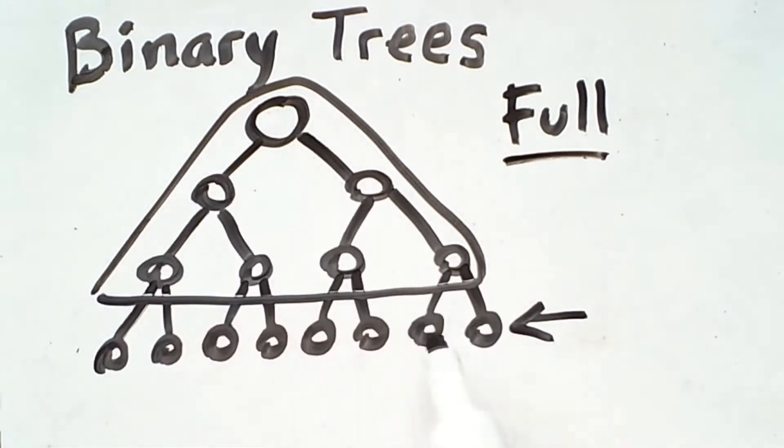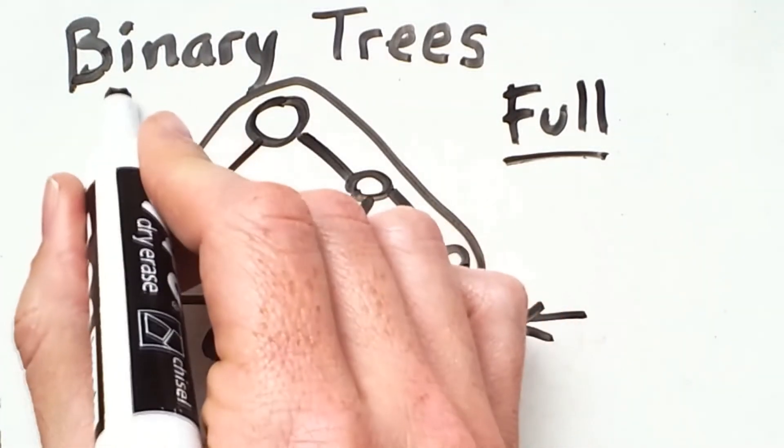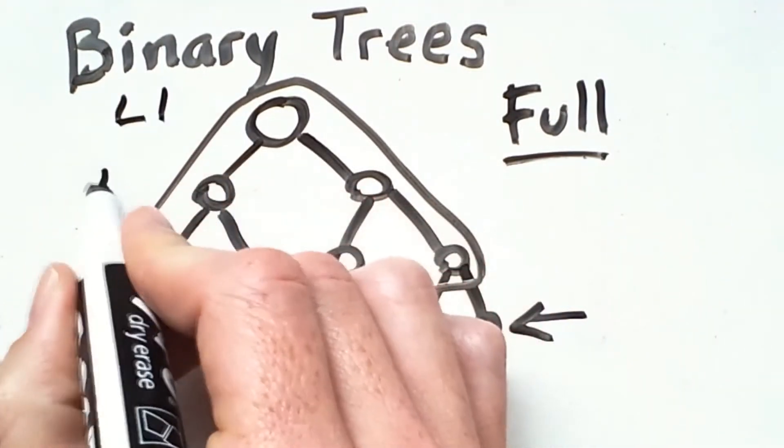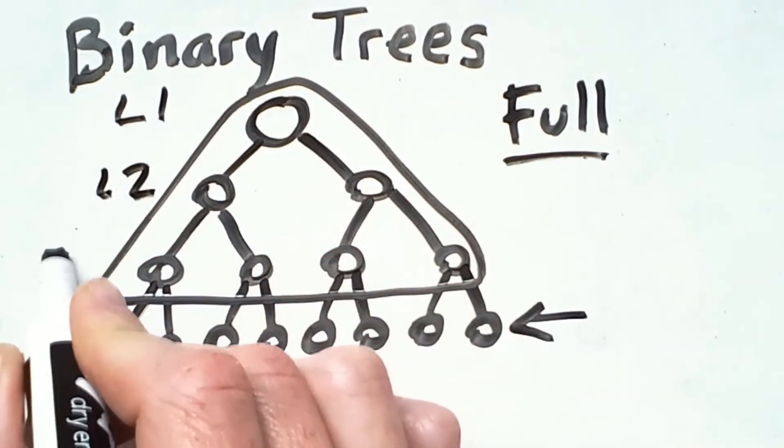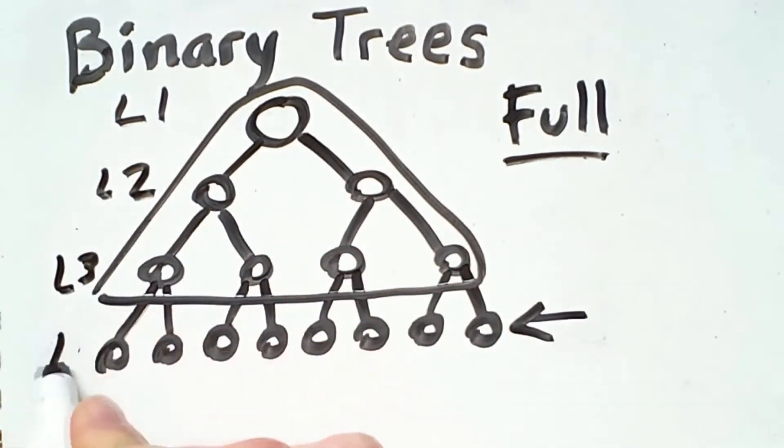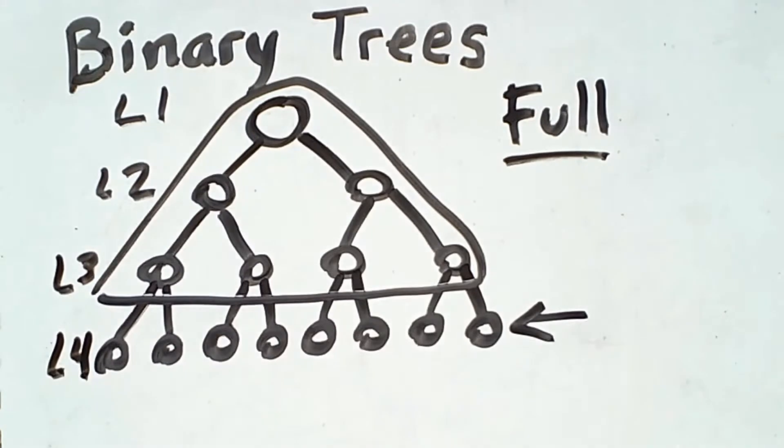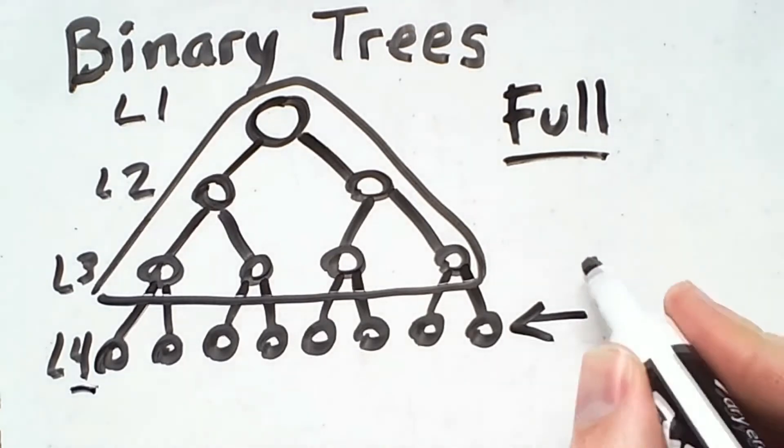So this is a full tree with a height of 4. And we see that we have levels 1, 2, 3, and 4. So another way of thinking about a full tree is that not only do all of the interior nodes have exactly two children, but all of the leaf nodes are at a level equal to the height.